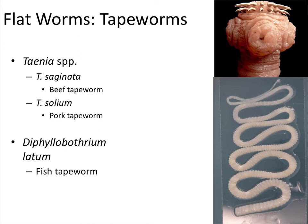We're moving into the flatworms now, and the first type we'll talk about are the tapeworms. Good news is they all function the same basic way. Tapeworms have a head called a scolex, and they use that head with its little barbs to dig into your intestines. The rest of the worm is pretty much filled with reproductive structures. This worm can get 10, 15, maybe 20 feet long — the head is up front, and everything else is primarily a reproductive structure.